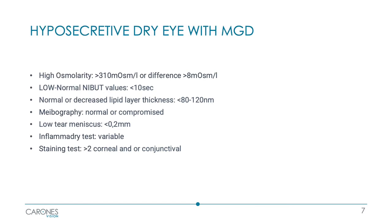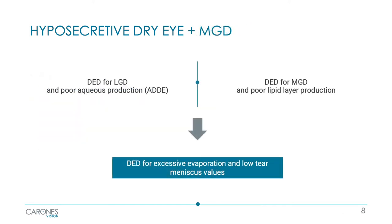In case of mixed dry eye, we will have a combination of the characteristics of both. Symptoms are usually prominent and the patient therefore tends to complain a lot. We have a deficiency of the lacrimal gland associated with the deficiency of the meibomian glands, with therefore an excessive evaporation and a poor tear meniscus value.